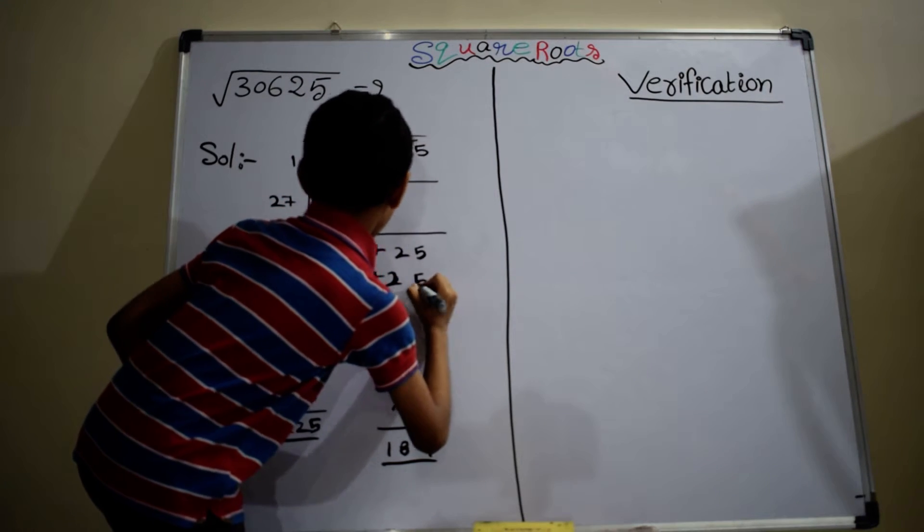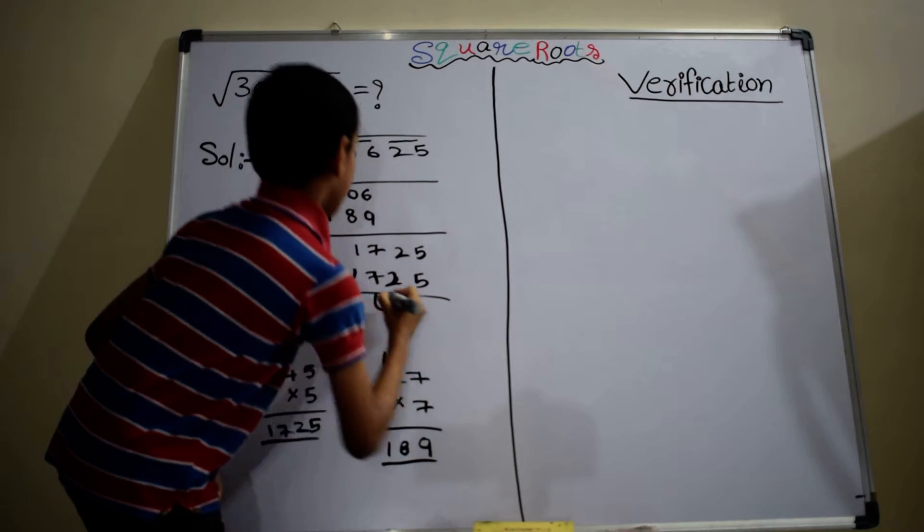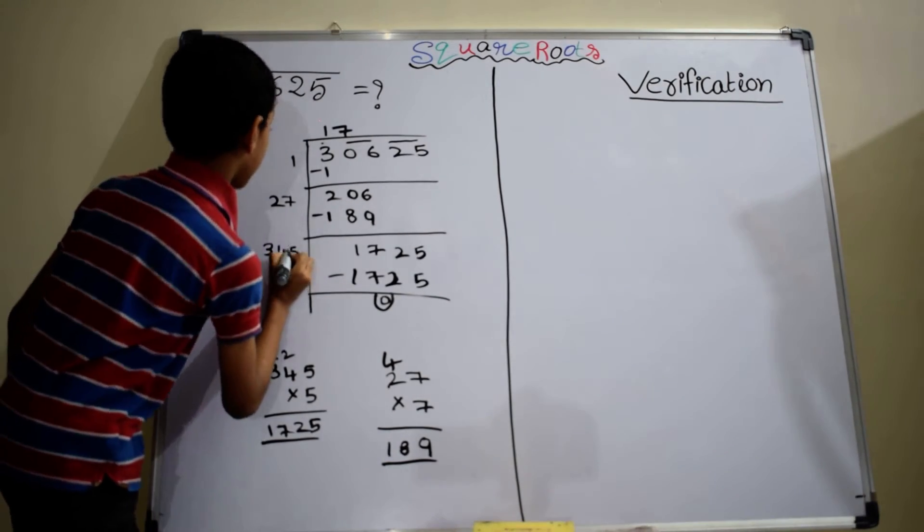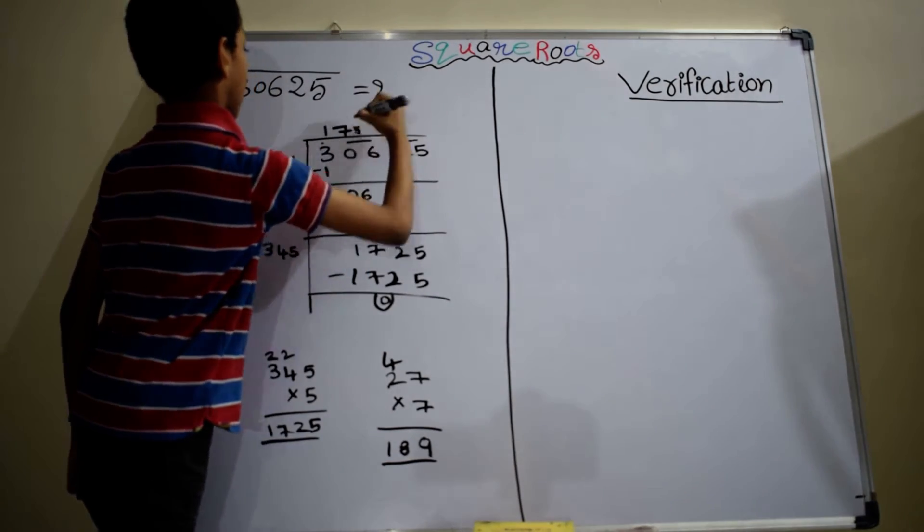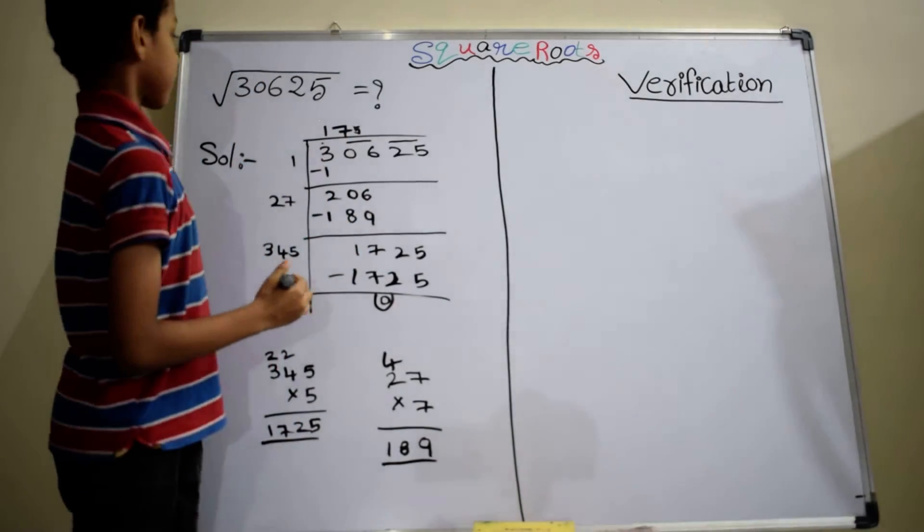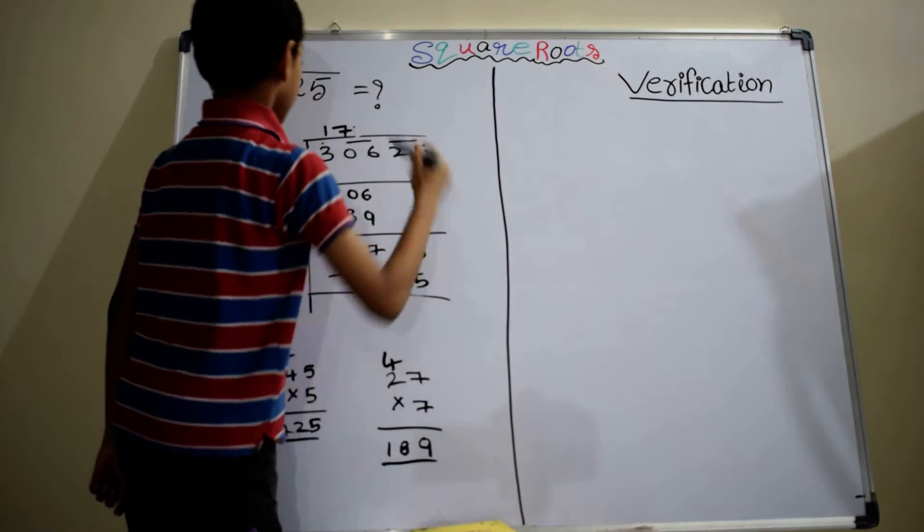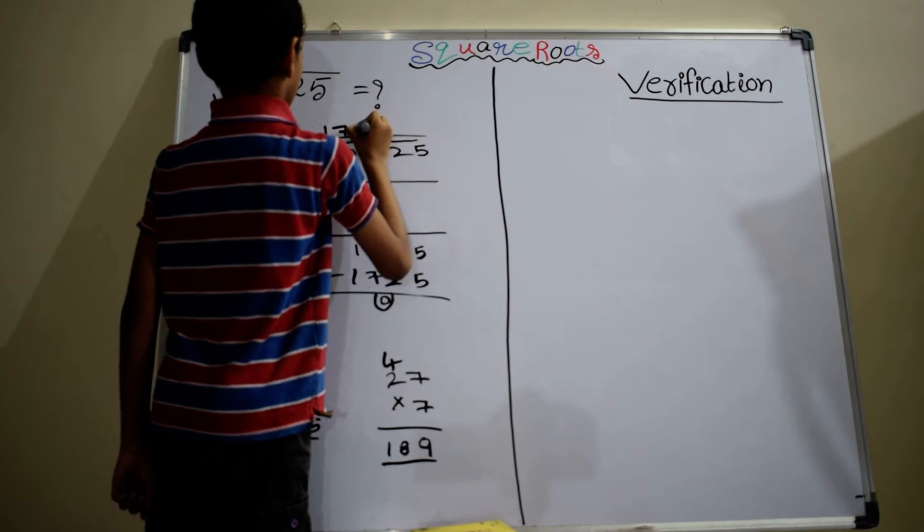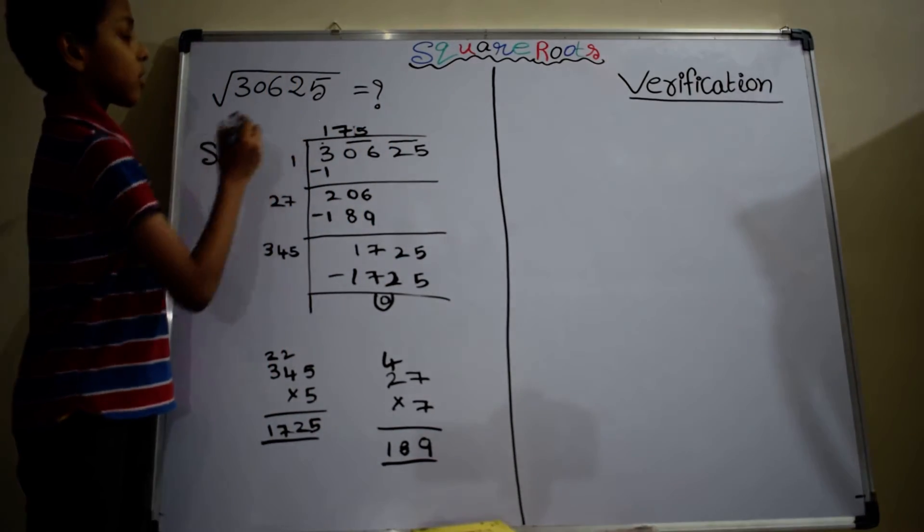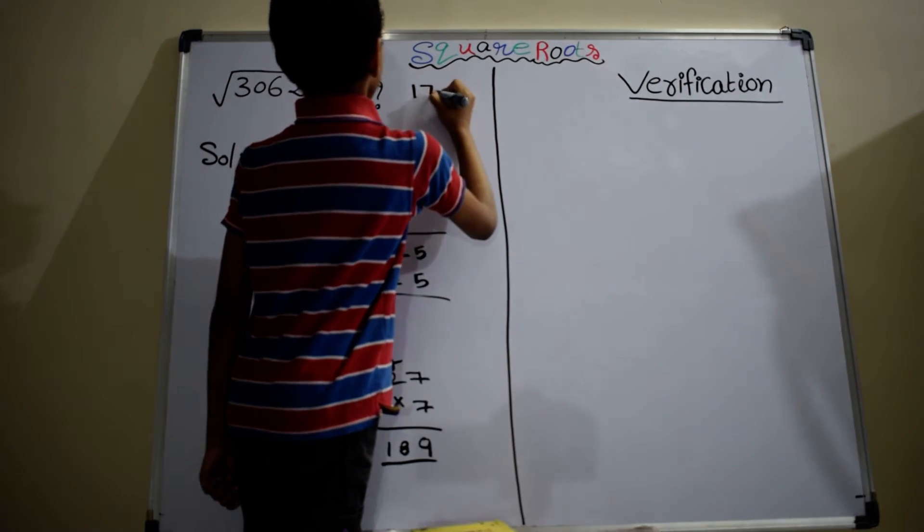1725 subtracted from 1725. Right here, 5 and as well as here. The square root of 3625 is 175.